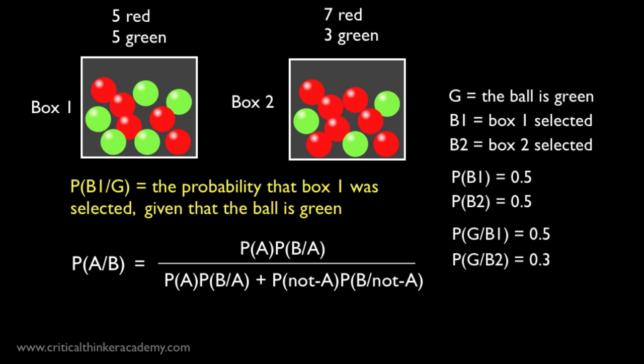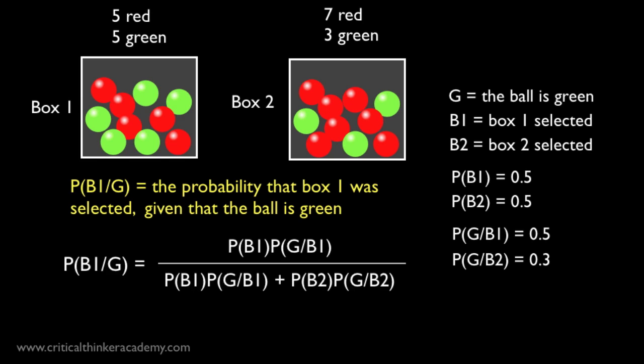Well, the setup says that we've only got two options, box 1 or box 2. So if it's not box 1, then it's got to be box 2. So not A is going to be replaced with B2, the event of selecting box 2. And here's what we get when we make those substitutions.